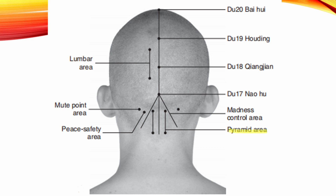Pyramid Area. Location: 1 cm lateral from the anterior-posterior midline, starting 1.5 cm superior from the second spinous process of the vertebrae, extending 3 cm downward. Indication: Motor function impairment.